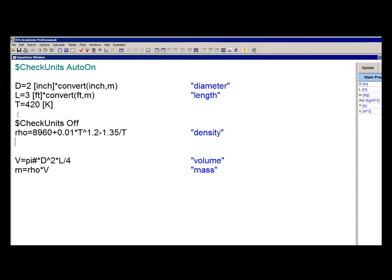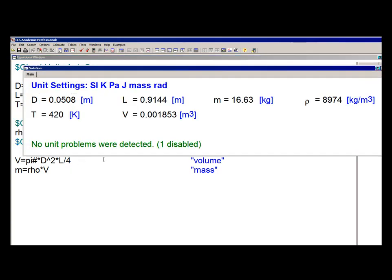And I can do that just by putting a dollar check units off above this equation and a dollar check units on below it. And now when I solve you can see there is no unit warnings indicated and I can proceed as normal.